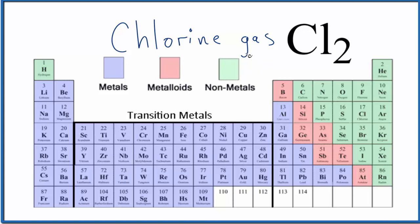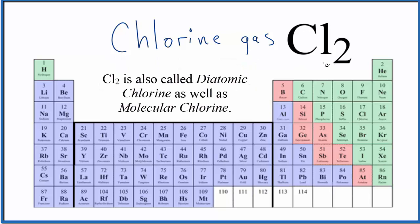There are two other names that are sometimes used for Cl2. The first is diatomic chlorine, which makes sense. Cl2 has two chlorines, so diatomic chlorine.